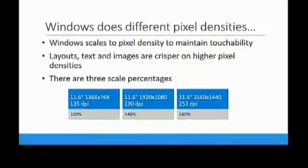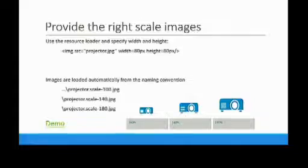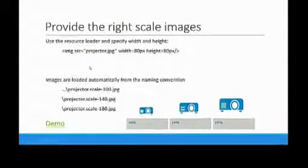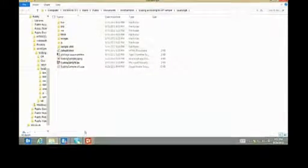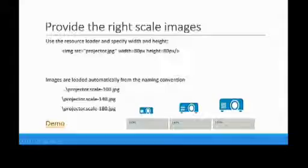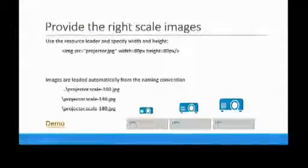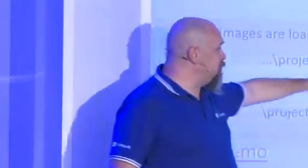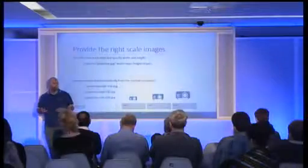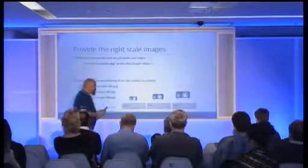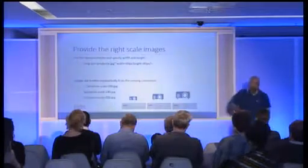Pixel density — there are three different pixel densities supported out of the box and you don't have to do anything extra. All you do is provide three different size images, named dash-100, dash-140, and dash-180, and the system will pick up the appropriate one. Better than that, what you should actually be doing is using SVG if possible. Scalable vector graphics have been around for a long time and have not gotten the airplay they needed. If you can use SVG, things will just scale and be happy.